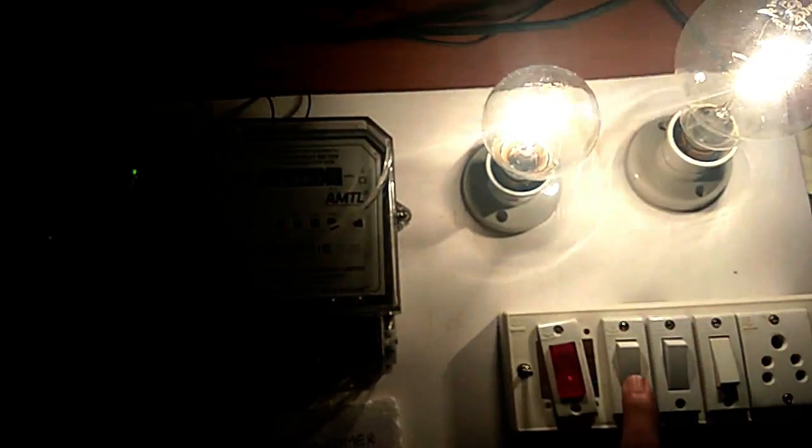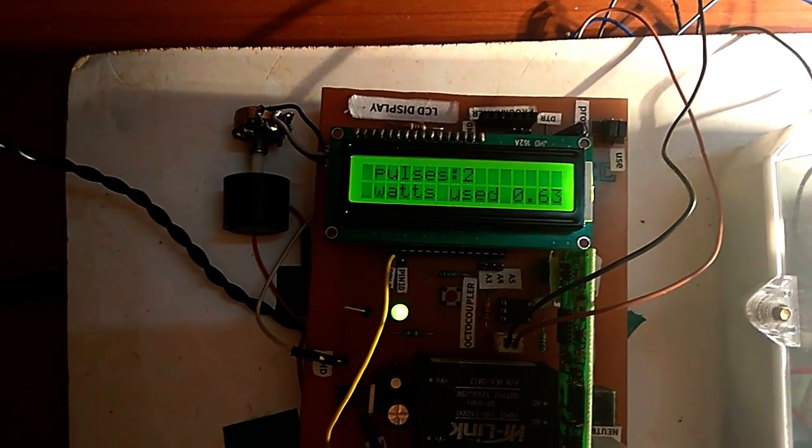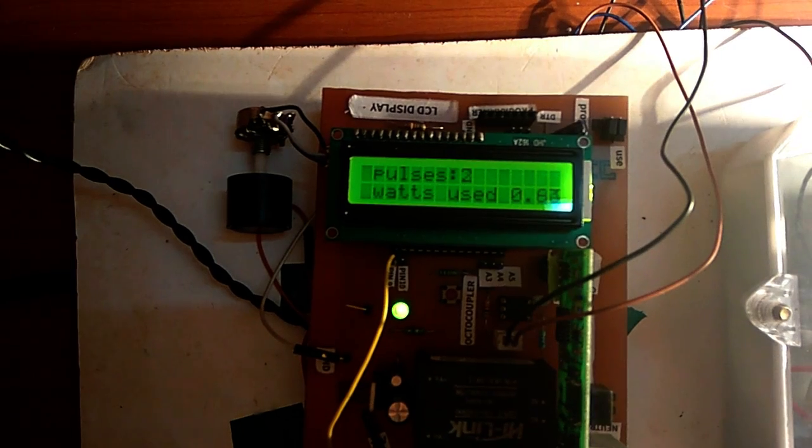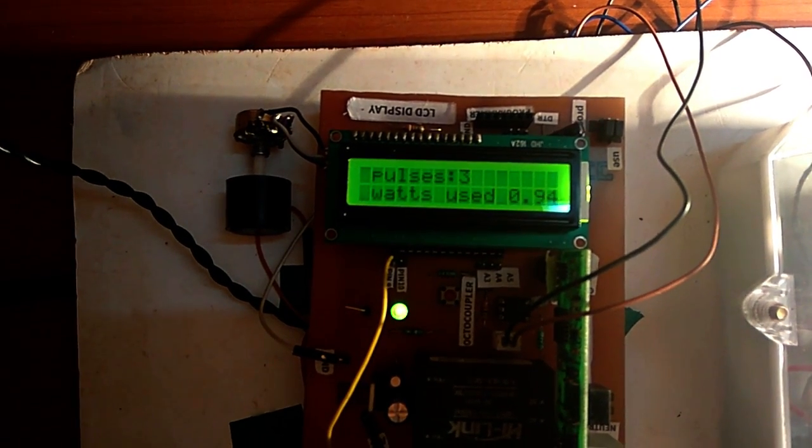When the 100 watt bulb is turned on in addition to the 200 watt bulb, the pulse rate increases and eventually increases watts used for a certain time duration.